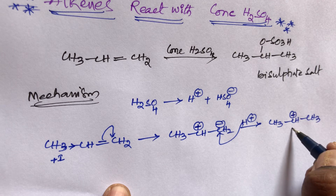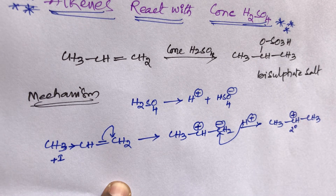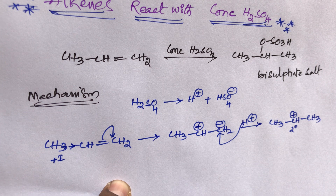The intermediate carbocation formed is CH₃–CH⁺–CH₃. This is called a secondary carbocation because the positive charge is present on a secondary carbon.